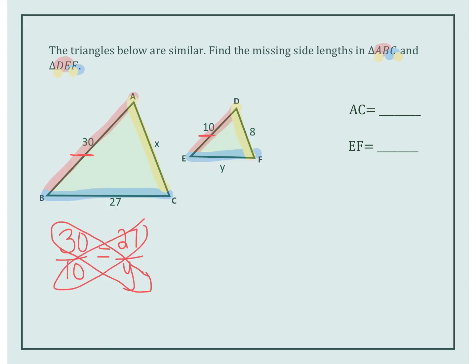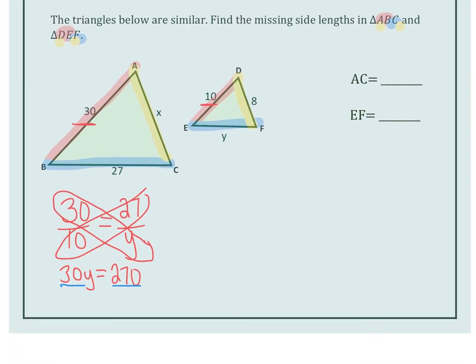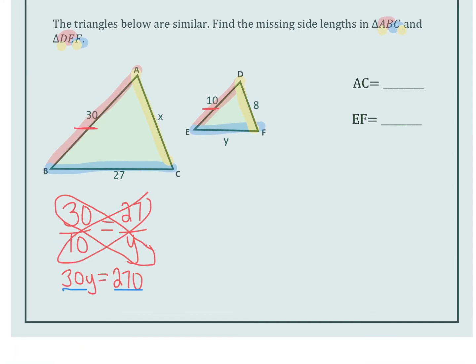I'm going to cross multiply. 30 times Y is 30Y, and 10 multiplied by 27 is 270. Inverse operation, go ahead and divide both sides by 30. So now 270 divided by 30 is 9. So Y is equal to 9, which means EF is equal to 9.